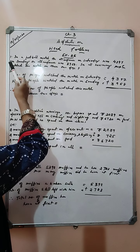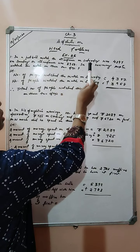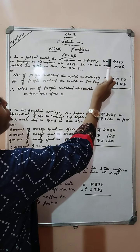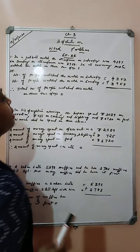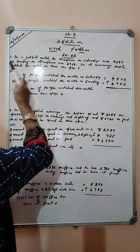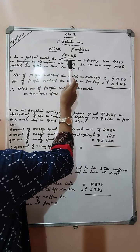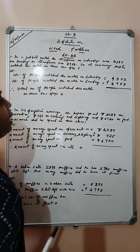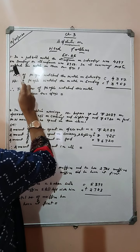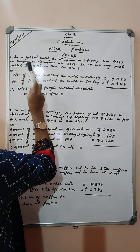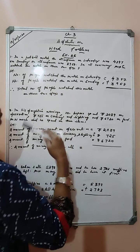Number one question is: in a football match, the attendance on Saturday was 4,397. On Sunday, the attendance was 3,958. In all, how many people watched this match on these two days?